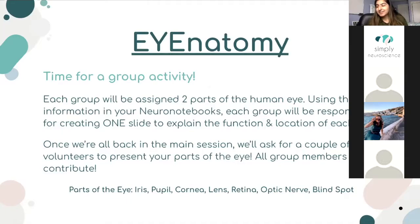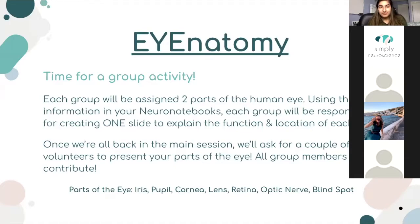That leads us to our first activity called Anatomy — it'll be a group activity. We'll divide you all up into groups, and each group will be assigned about one or two parts of the human eye. Using the information in your neuro notebooks, each group will be responsible for creating about one slide per part of the eye, explaining its function, location, and other details. You'll also be able to draw it. Once we're back in the main session, we'll ask for a couple of volunteers — any brave soldiers who want to share what they put on their slide.